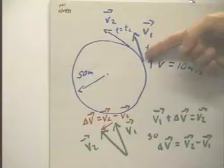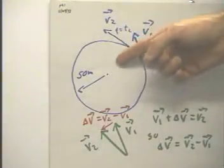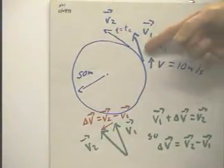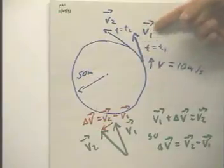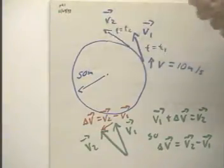Now, at this point, the velocity is perpendicular to a radial line, and at this point, the velocity is perpendicular to a radial line. I'm not sure I've drawn those all that well, but at some time t equals t1 we'll have a velocity v1 like this, and at a later time t equals t2 we'll have a velocity v2 like this.